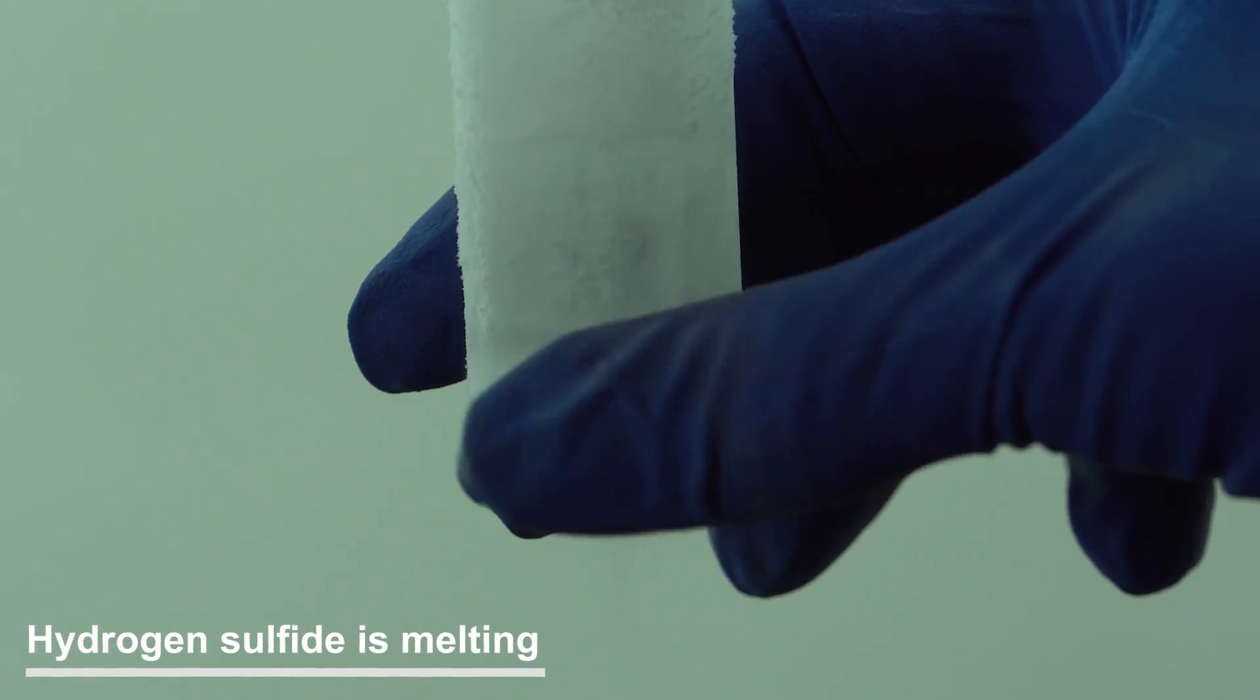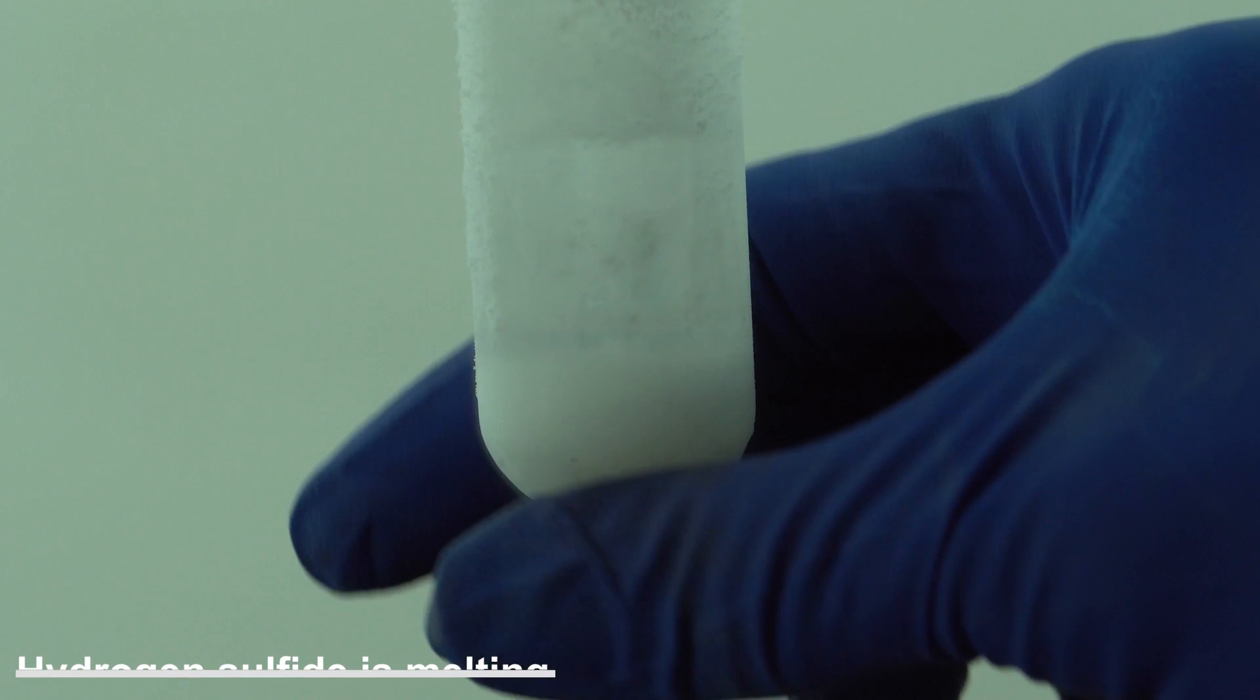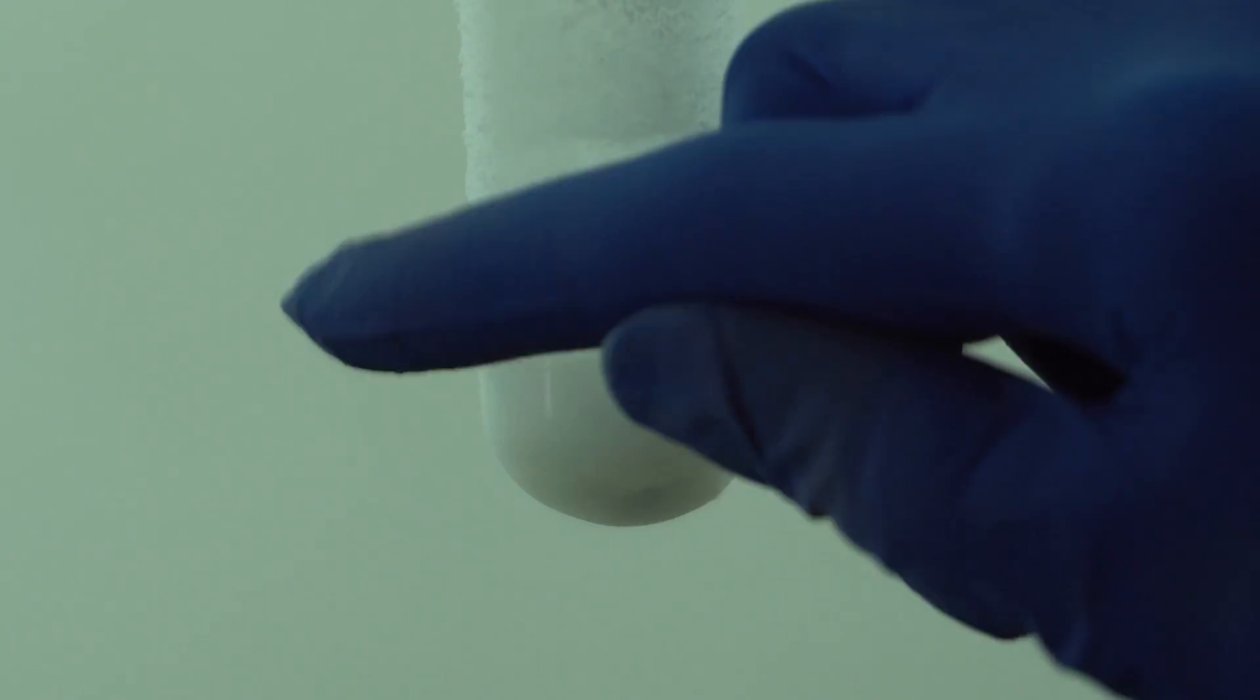Hydrogen sulfide, unlike carbon monoxide, has a higher melting and boiling point. That's why it is much more convenient to store it in a test tube.